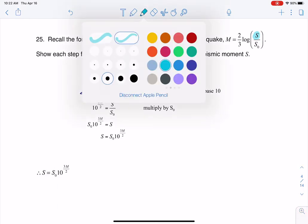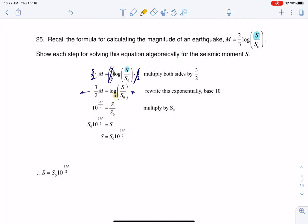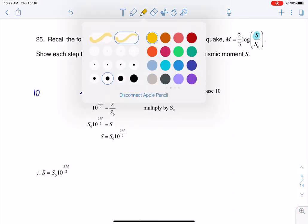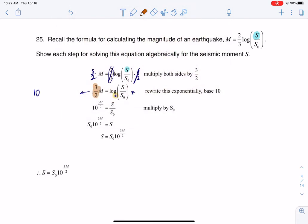Let me change highlighter colors here. Since the base of my logarithm is 10, then the base of my exponent is also going to be 10. Now remember, logarithms themselves are exponents. Since this logarithm is equal to three halves M, that is my exponent, three halves M.